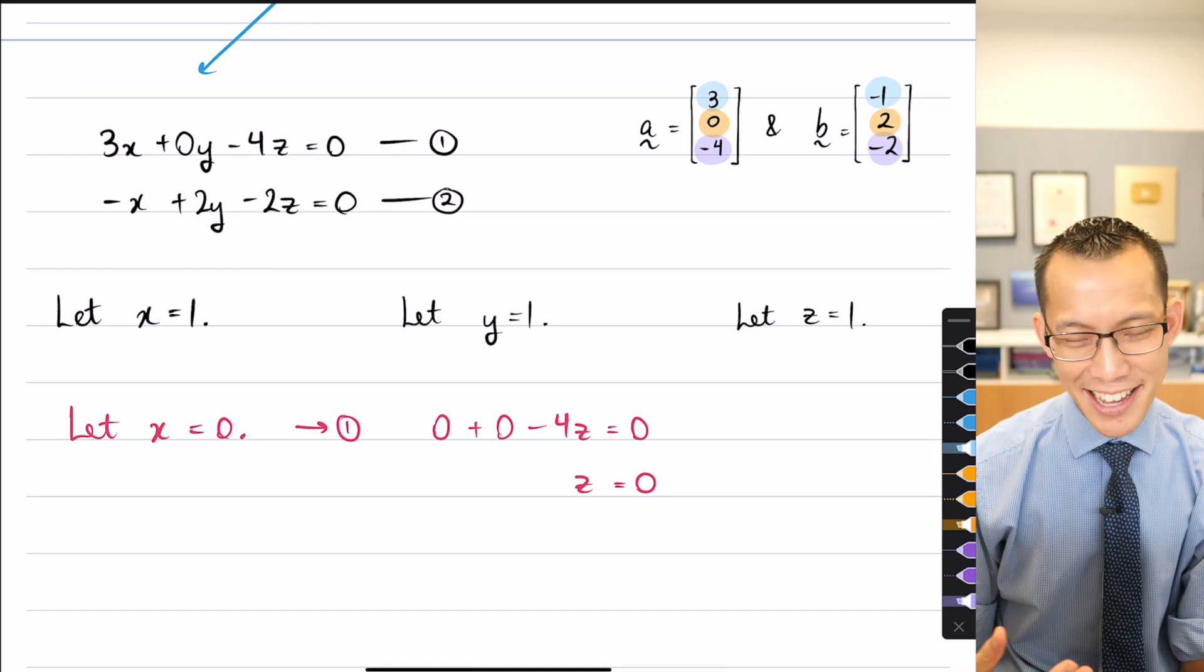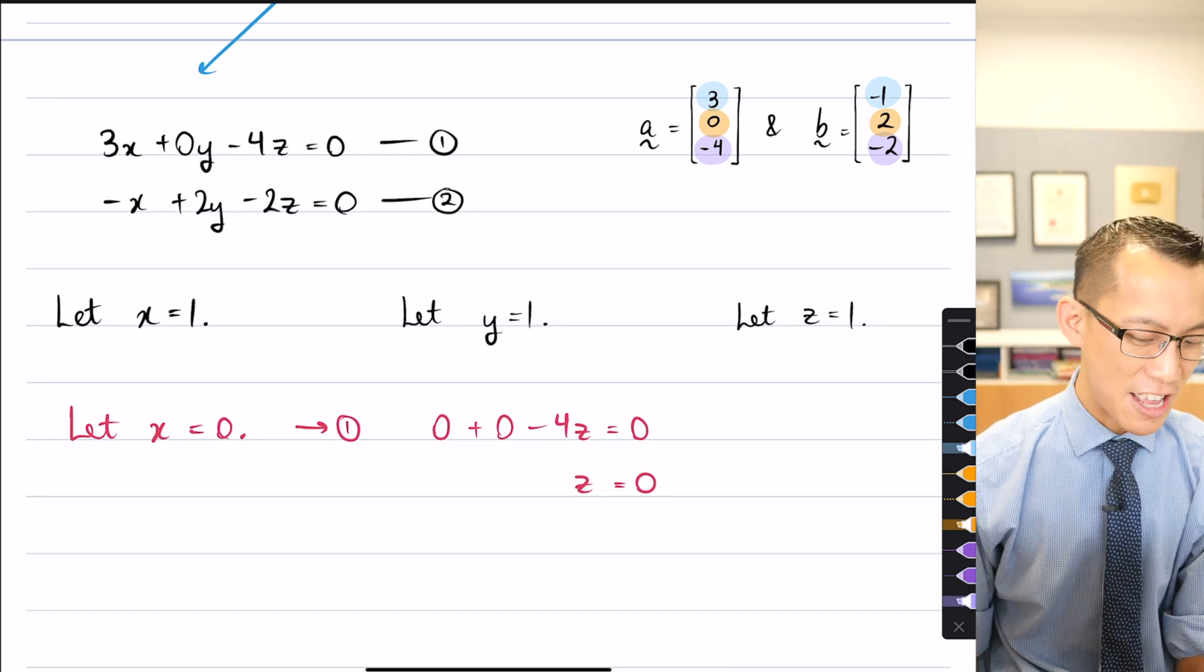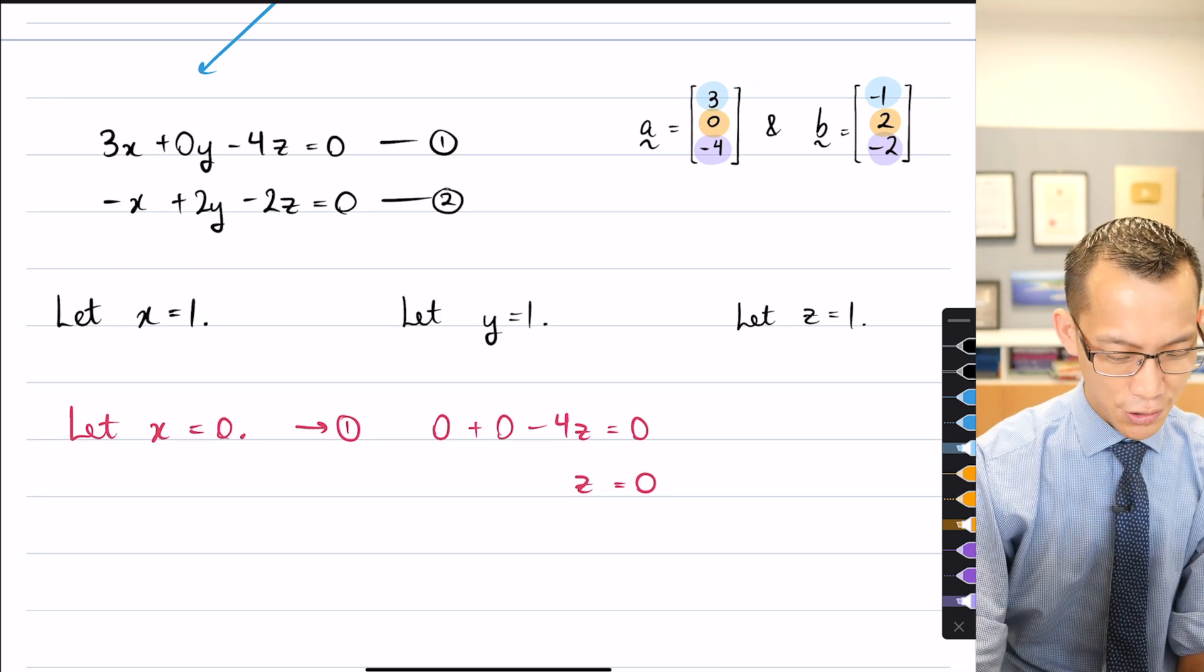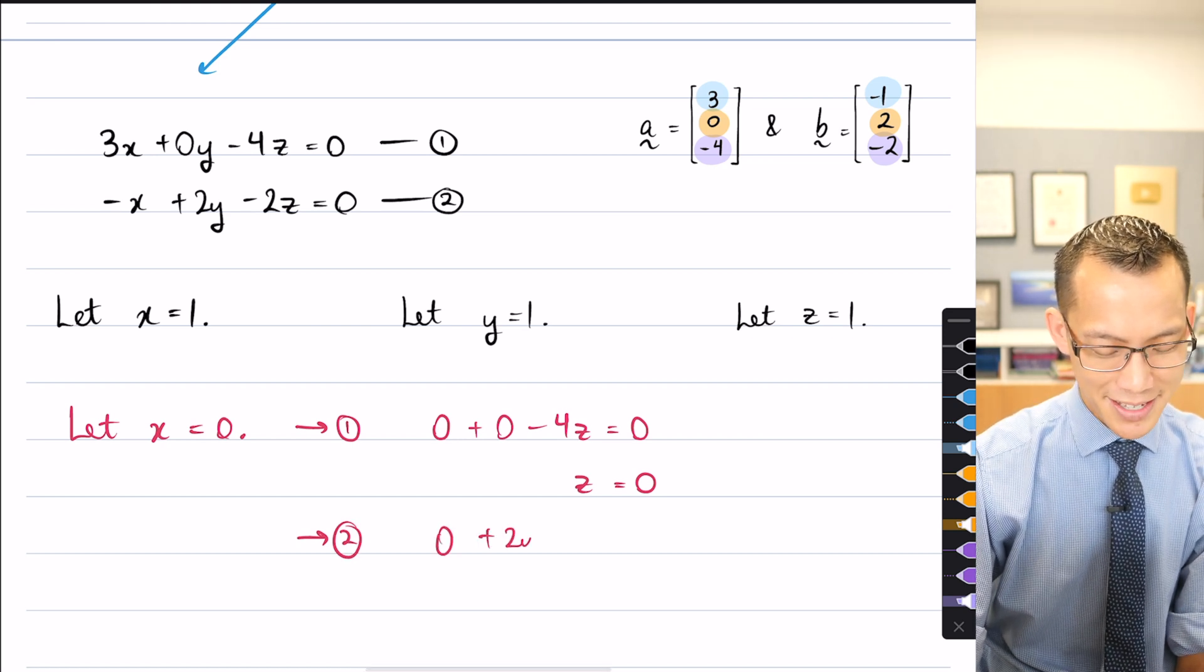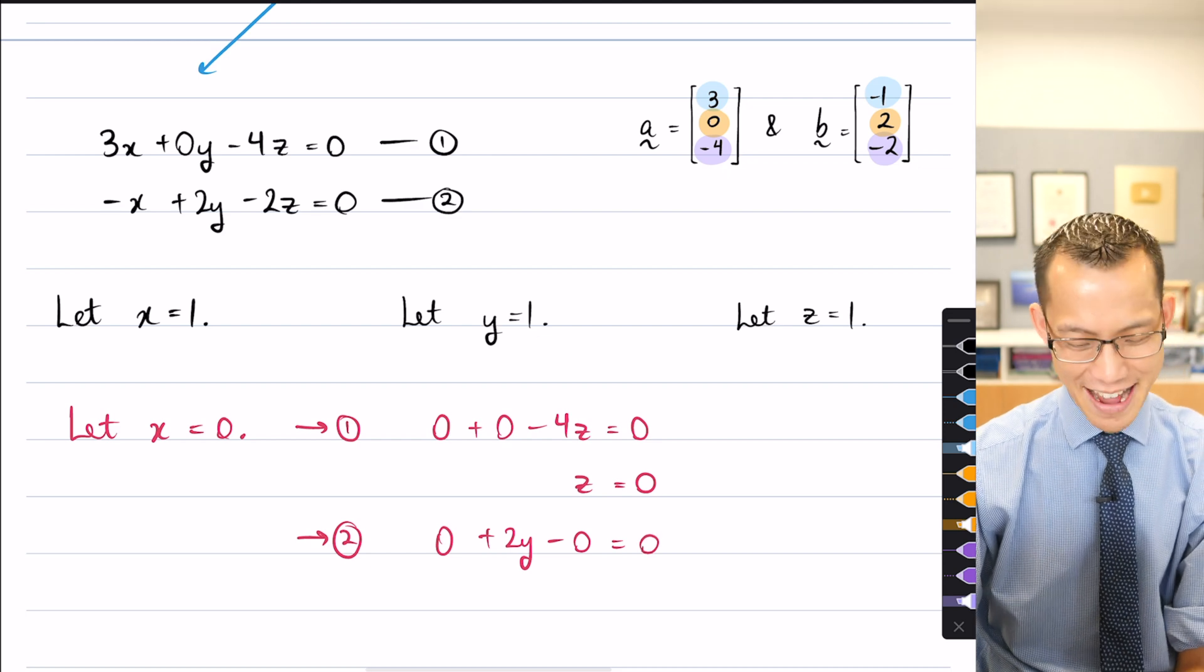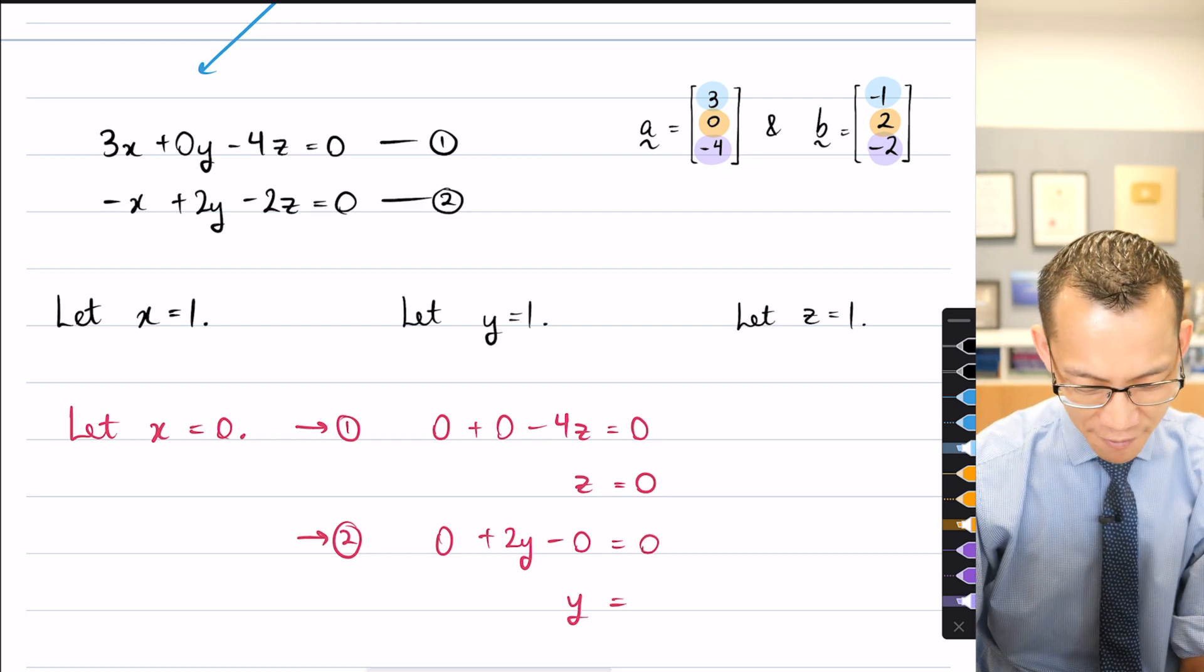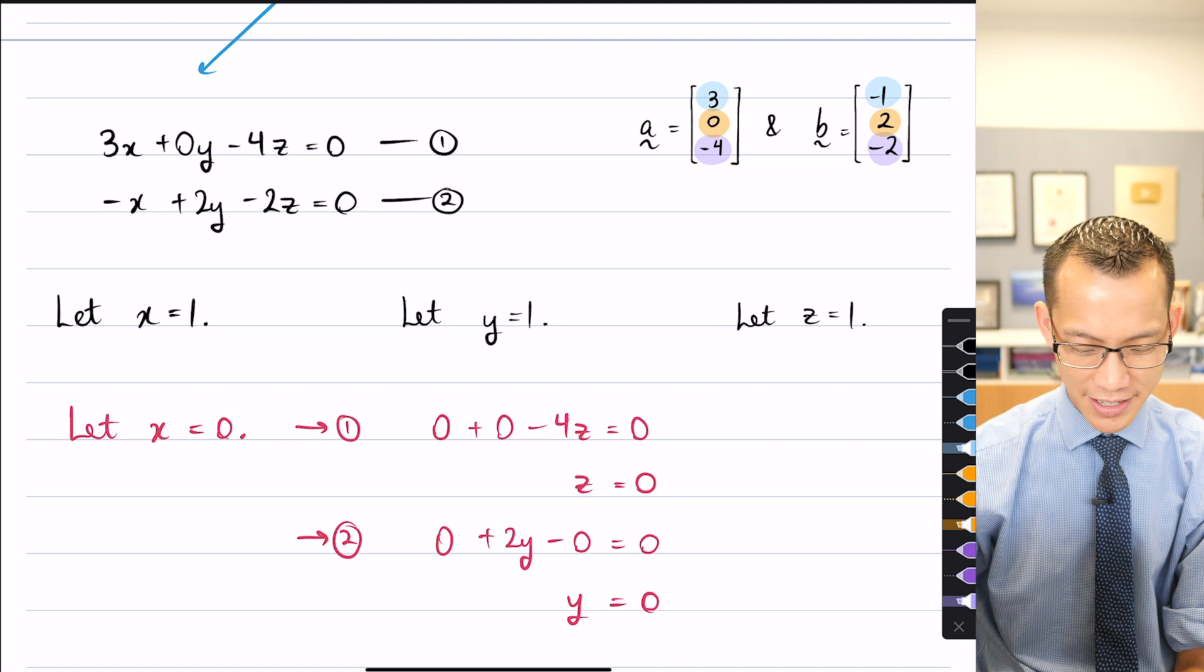And then when you take x equals zero and z equals zero, and you pop them into equation two, you pretty quickly realize, you're like, uh-oh, this is not a good prize. I'm getting zeros for everything, right? I'm getting the zero vector.